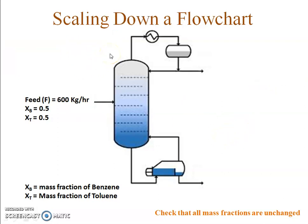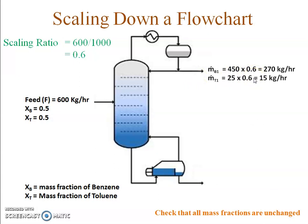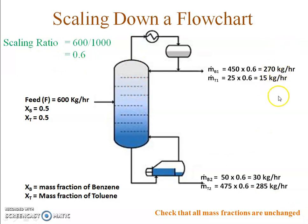Now let's say I want to scale down a flowchart. From 1000 kg per hour I am going to 600 kg per hour. I find the scaling ratio: new value 600 divided by old value 1000 gives a scaling ratio of 0.6. I multiply all the original quantities by 0.6 to get the new flow rates. Even when scaled down, mass fractions of the individual streams remain the same — only the flow rates change.